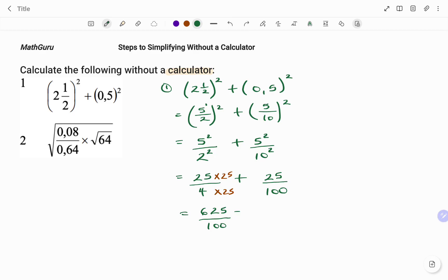plus 25 over 100. Now that the denominators are the same, I'm going to add the numerators, that's 625 plus 25 over the same denominator, which is 100.